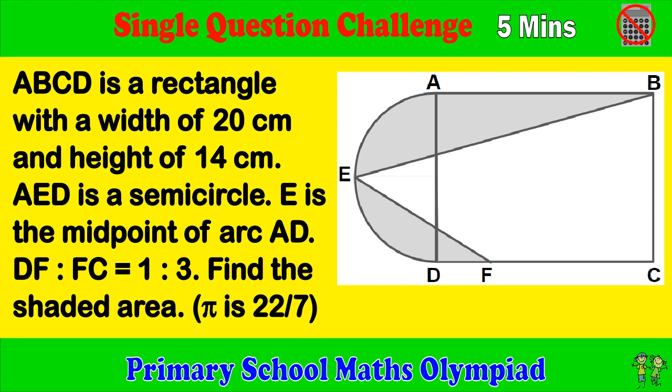ABCD is a rectangle with a width of 20 cm and height of 14 cm. AED is a semicircle. E is the midpoint of arc AD. DF to FC ratio equals 1 to 3. Find the shaded area. Pi equals 22 over 7.